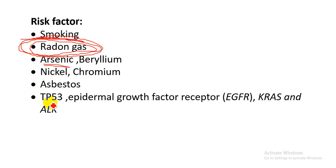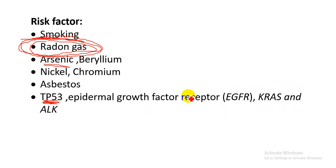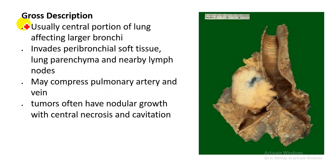TP-53 mutation is also associated with Li-Fraumeni syndrome, osteosarcoma, brain tumor, and various other types of cancer. KRAS mutation is also associated with colon carcinoma, pancreatic carcinoma, and endometrial carcinoma. Epidermal growth factor receptor mutation is also seen in glioblastoma.